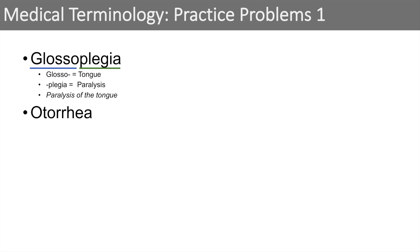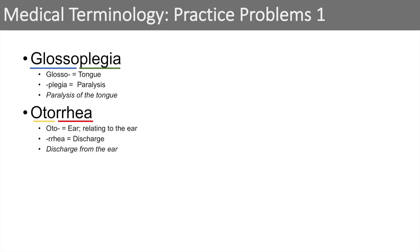The next word we're going to look at is otorrhea. When we break it down, we look at the first portion: auto means ear or relating to the ear. And rhea — we've learned that rhea stands for discharge. So when we put this together, otorrhea simply means a discharge from the ear, whether that be wax, pus, or anything — it's really any kind of discharge from the ear.